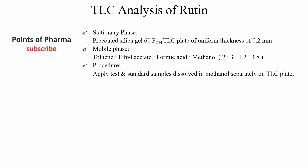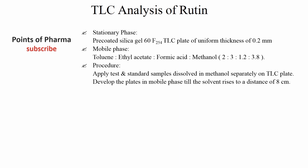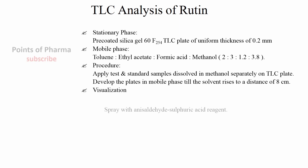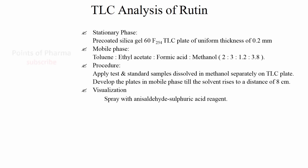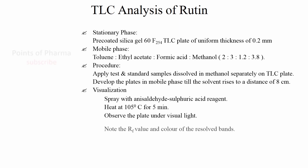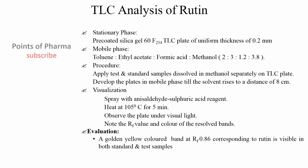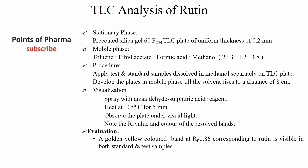Procedure: Apply test and standard samples dissolved in methanol separately on the TLC plate. Develop the plate in mobile phase till the solvent rises to a distance of 8 cm. Visualization: Spray with anisaldehyde sulfuric acid reagent and heat at 105 degrees centigrade for 5 minutes. Observe the plate under visible light and note the Rf value and color of the resultant band. Evaluation: A golden yellow colored band at Rf 0.86 corresponding to Rutin is visible in both standard and test samples.